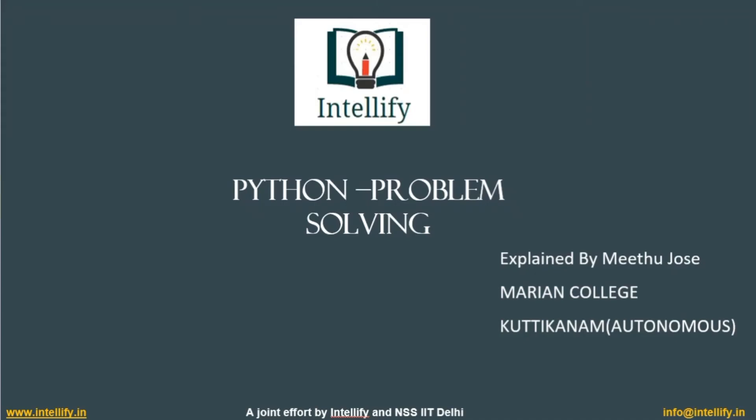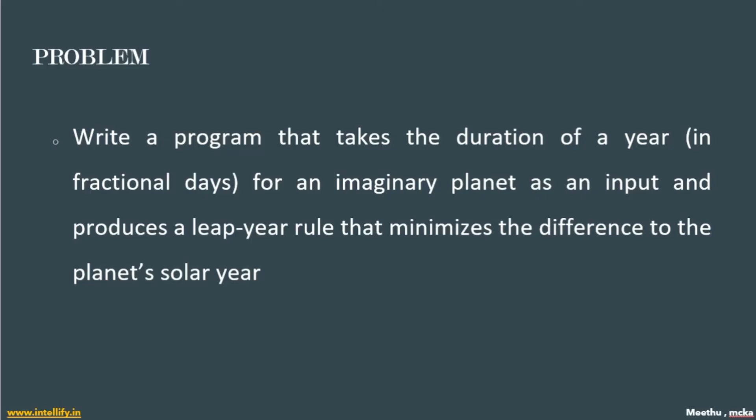Hello, I'm Midhu. Welcome back to another session. Today we are going to see a problem: write a program that takes the duration of a year in fractional days for an imaginary planet as an input and produces a leap year rule that minimizes the difference to the planet's solar year. We need to input the duration of a year of an imaginary planet and the required output should be a leap year rule.